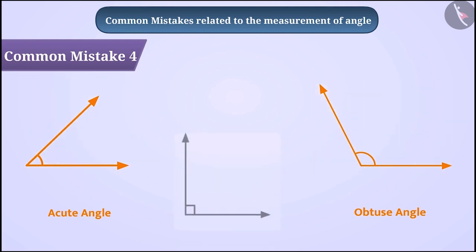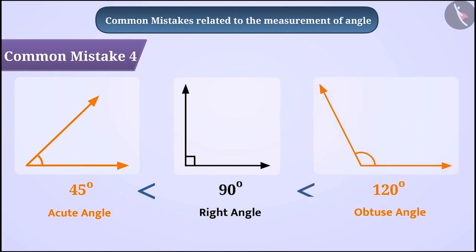To find out, we compare the angles with the right angle. If the angle is smaller than the right angle, then it is an acute angle, and if it is larger, it is an obtuse angle.